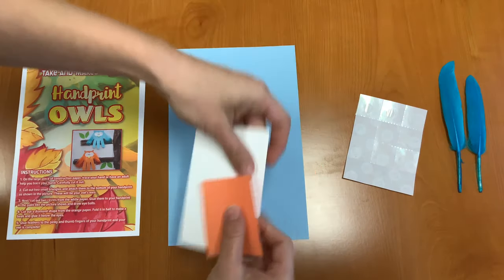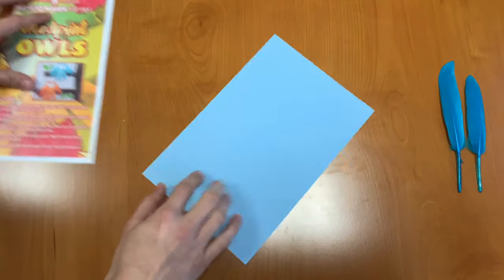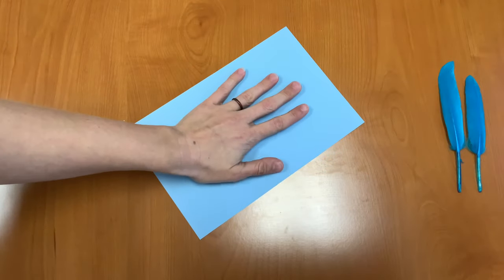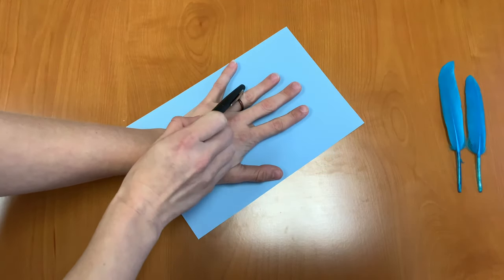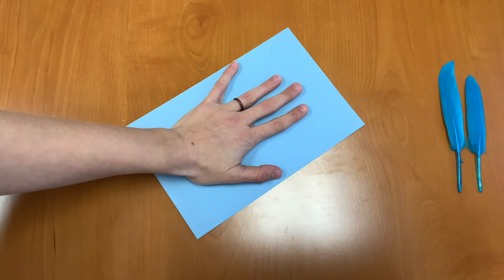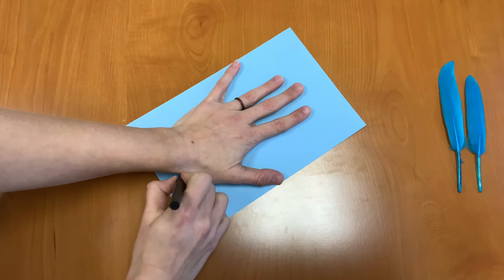The first thing you'll need is your large piece of construction paper. What we're going to do is trace your hand onto it. You want to make sure that your thumb and your pinky are a little bit out and that your middle fingers are a little bit closer together. So I'm going to trace my hand.